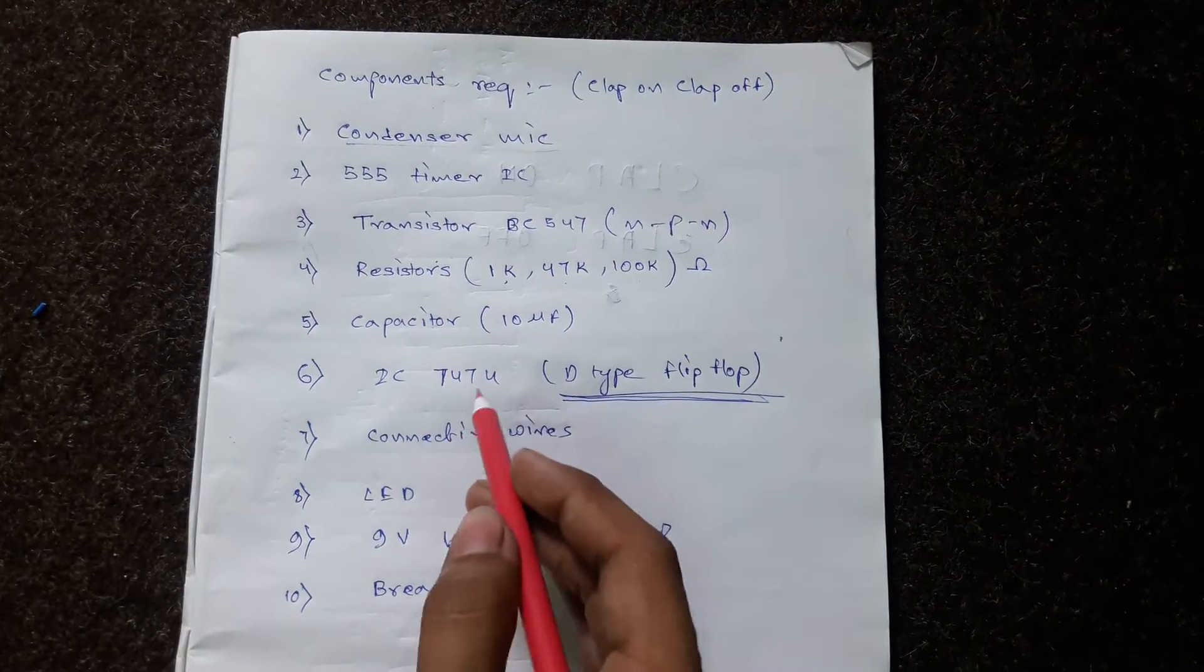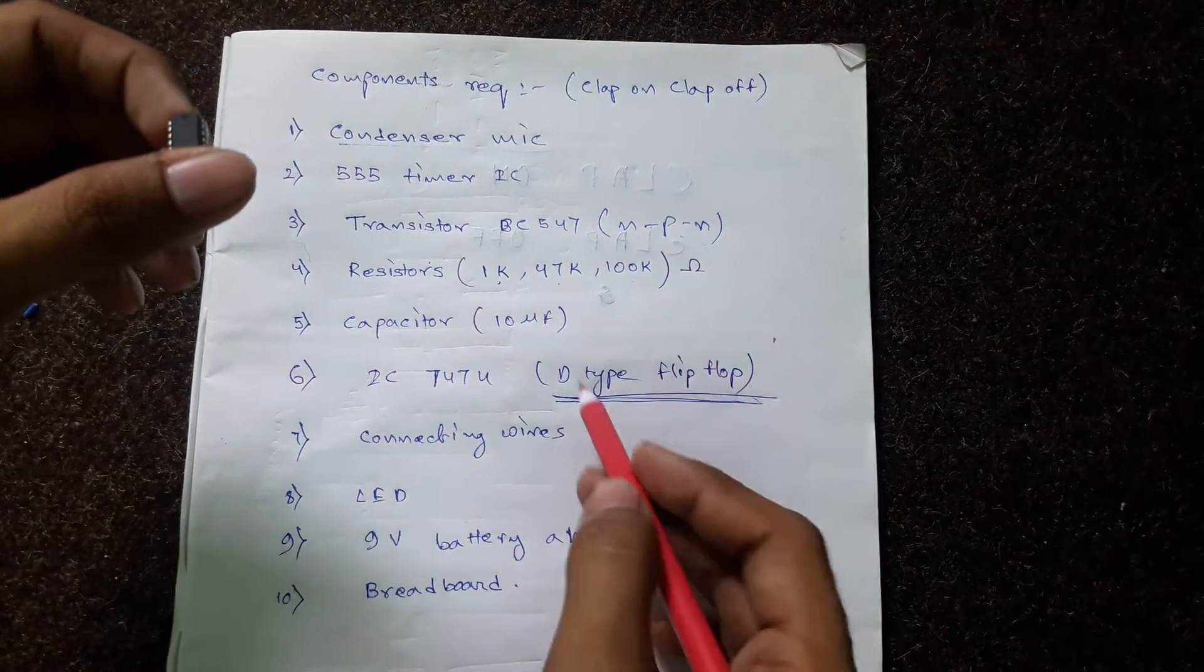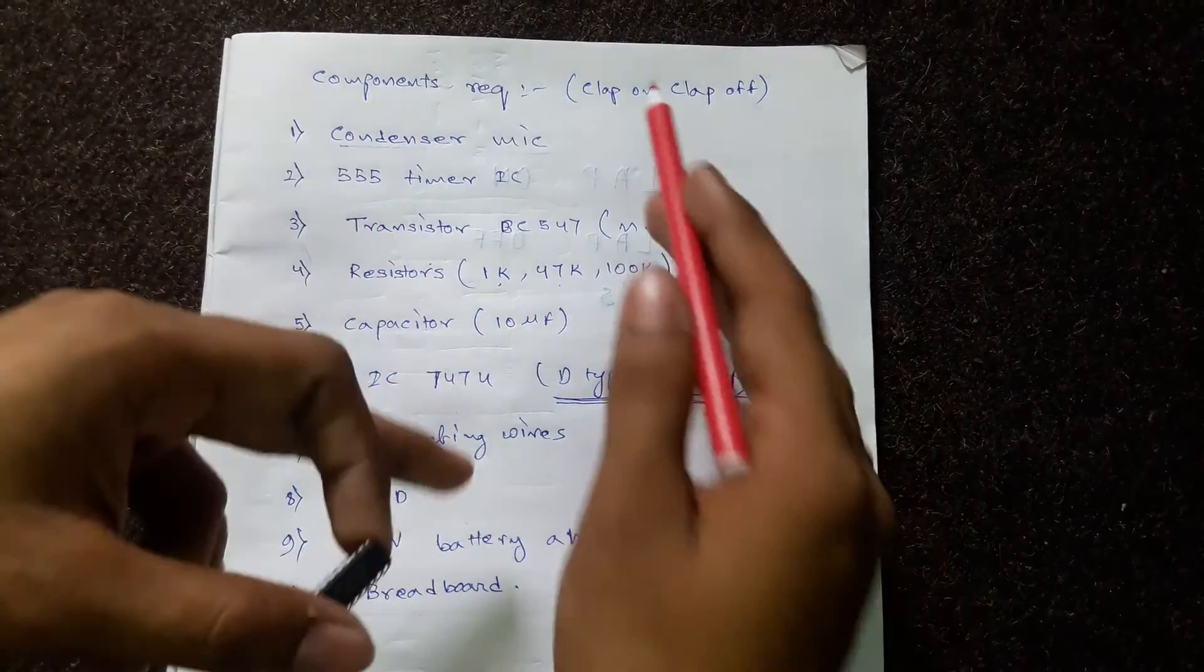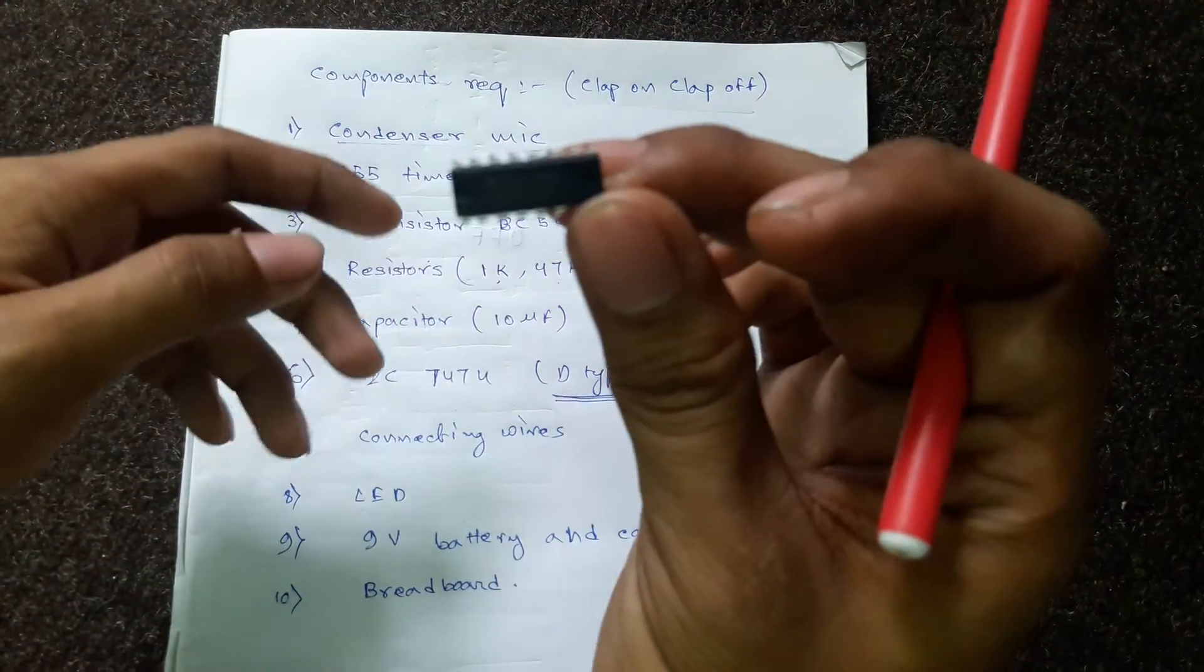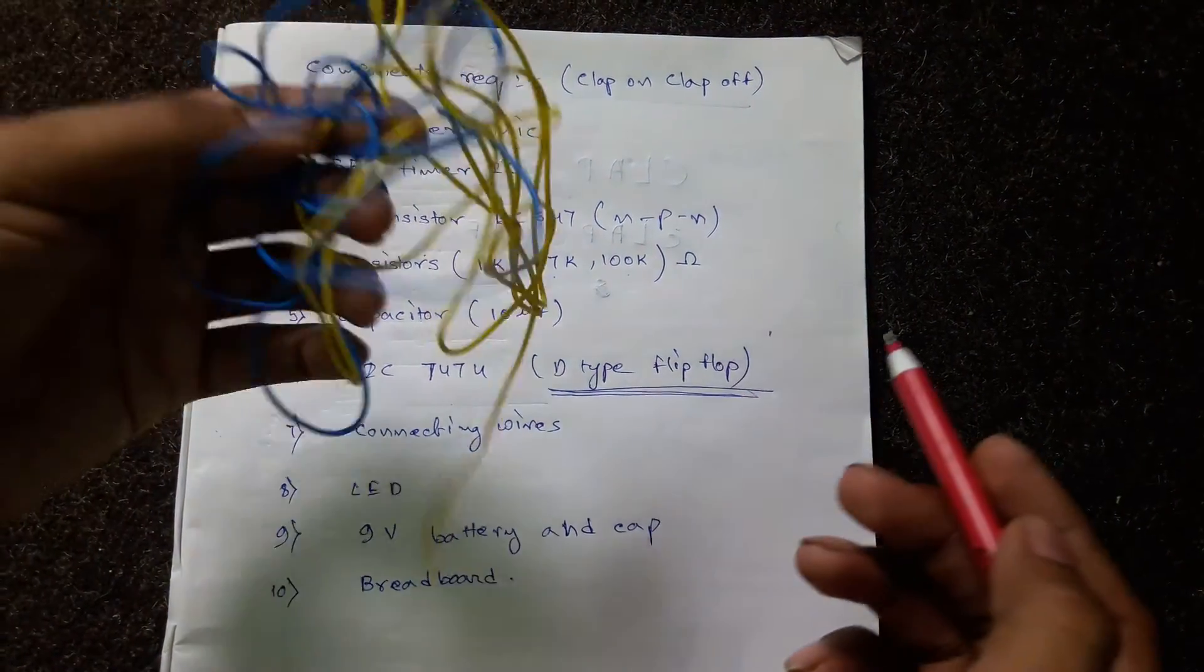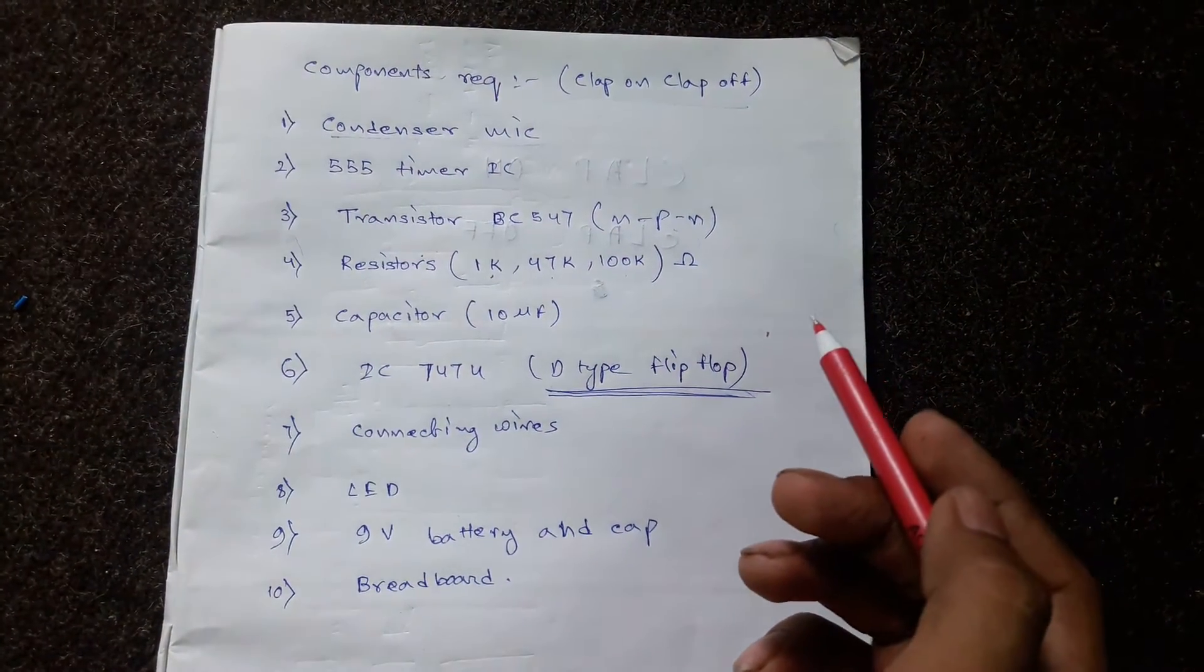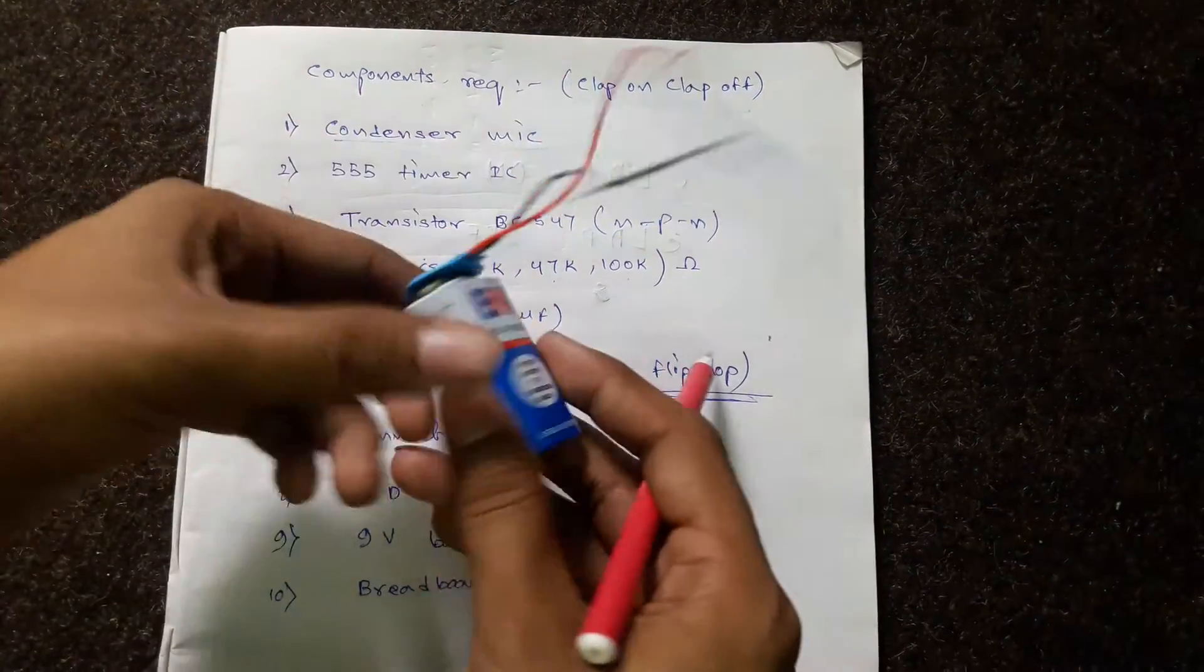Now comes the IC 7474, also known as D-type flip-flop. This will do the specified switching function. Then we have connecting wires, LEDs, a 9-volt battery, and a battery cap.